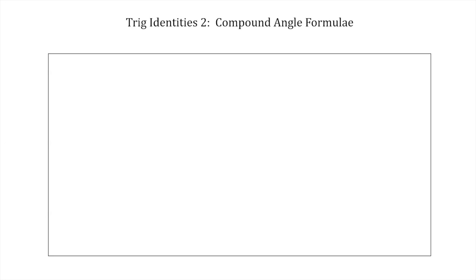The first identity is that sin(x ± y) equals sin x cos y ± cos x sin y. So when we have sine of a sum or difference of two numbers inside the function, we can rewrite it as sine x cos y plus or minus cos x sine y. If it's a plus inside the sine on the left-hand side, it's a plus on the right-hand side, and vice versa.